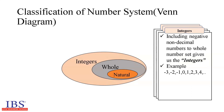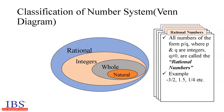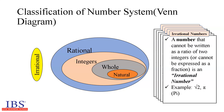Integers are negative and non-decimal numbers including the set of whole numbers. Rational numbers are the numbers expressed in the form p by q, where p and q are integers and q is not equal to 0. All integers are rational numbers as they can be expressed in the form p by q and q is not equal to 0. Rational numbers include fractions as well. Irrational numbers are those numbers which are not rational. These are the numbers which have non-repeating, non-terminating decimals.